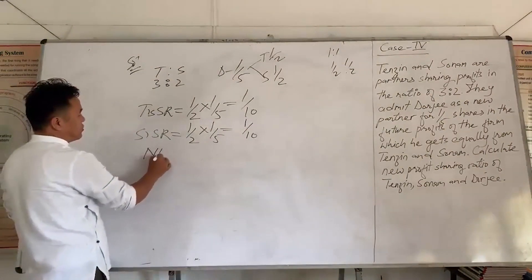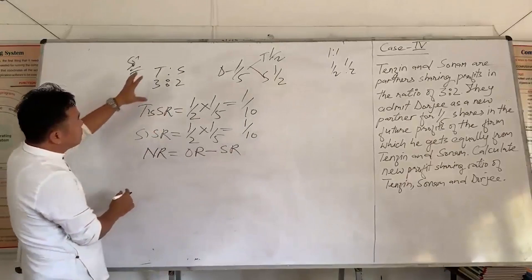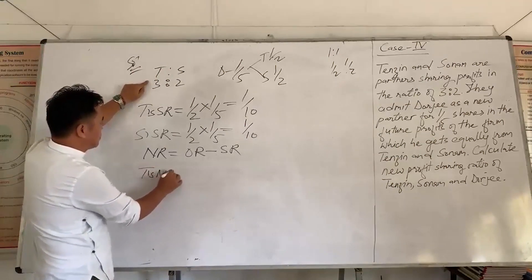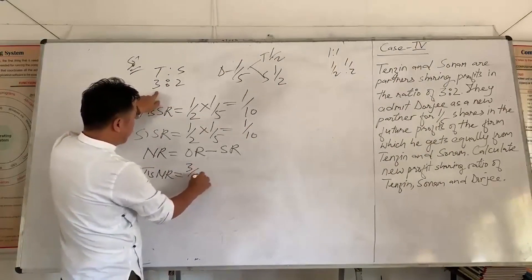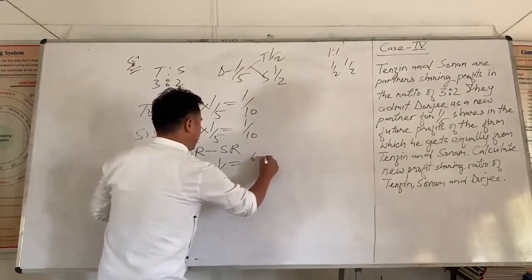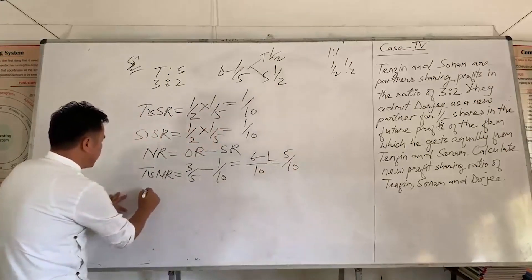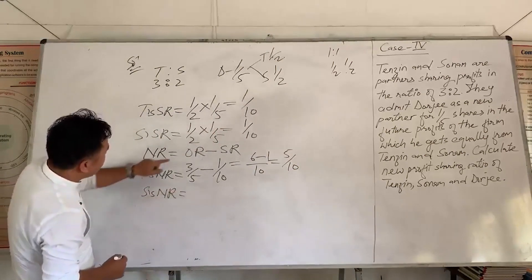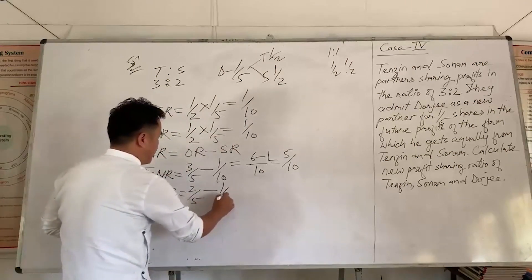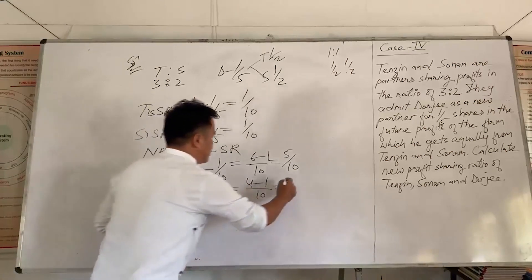Since we have the value of the sacrificing ratio of all partners, we can apply the formula: new ratio equals old ratio minus sacrificing ratio. Tenzin's new ratio: T's old ratio is 3 by 5 minus sacrifice ratio of 1 by 10. Making denominators same: 6 by 10 minus 1 by 10 gives 5 by 10. Now S's new ratio: S's old ratio is 2 by 5 minus 1 by 10, which gives 4 by 10 minus 1 by 10, so S's new ratio is 3 by 10.